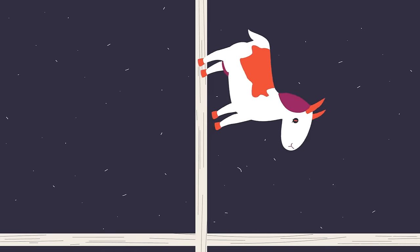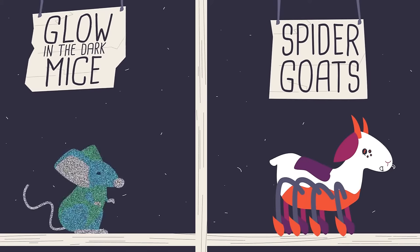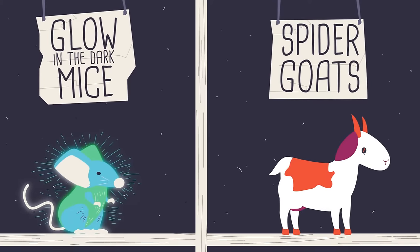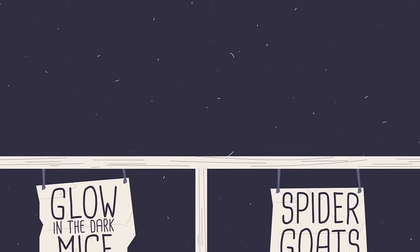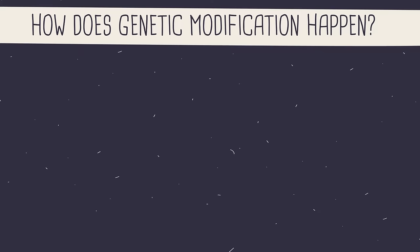And then there are some wacky organisms, like spider goats and glow-in-the-dark mice. So let's find out how genetic modification happens.